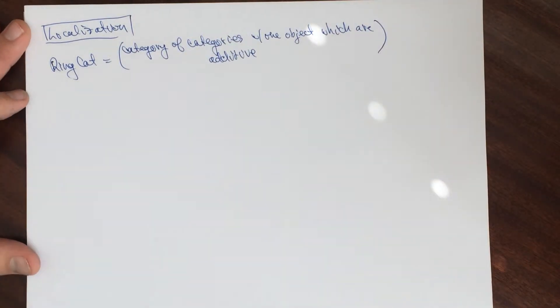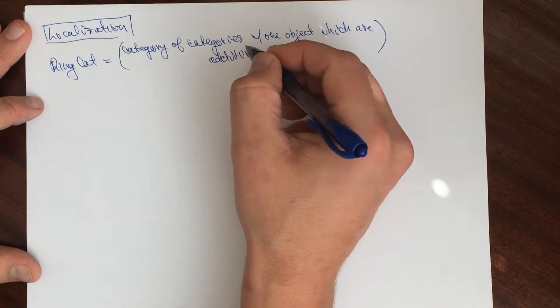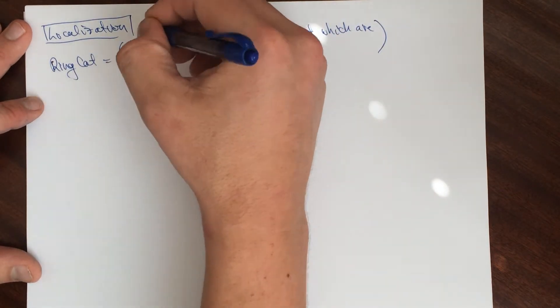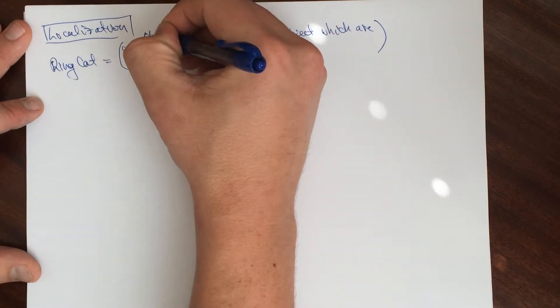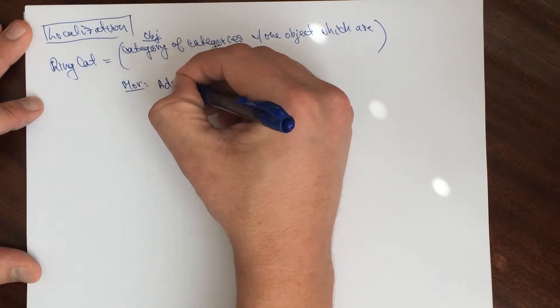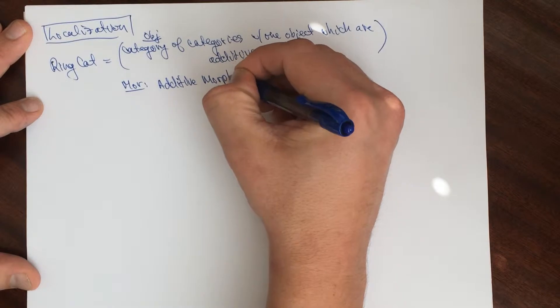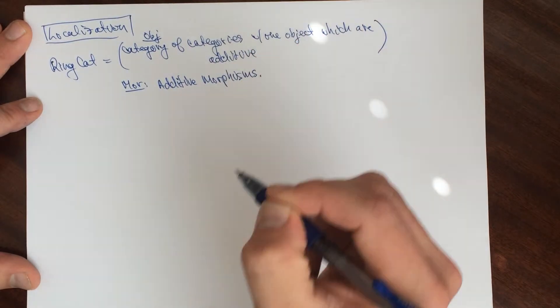We just have a category of categories. So in this category, the morphisms, since we're doing additive, so morphisms here, so these are the objects. Morphisms are going to be additive morphisms.